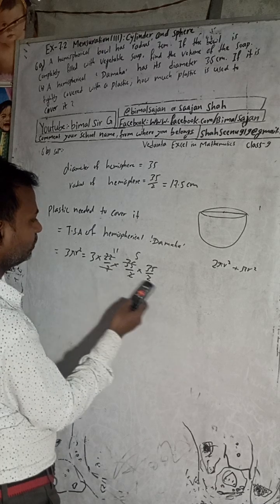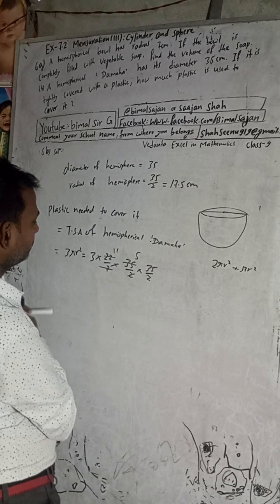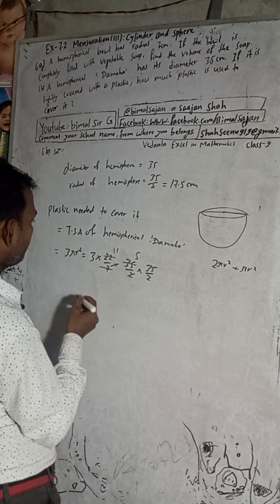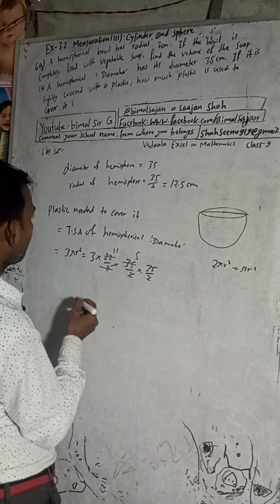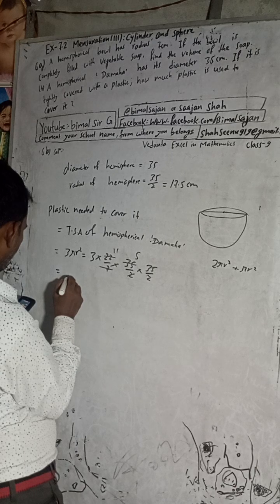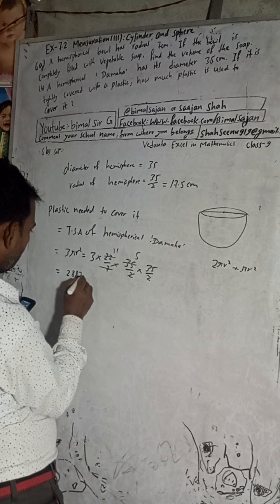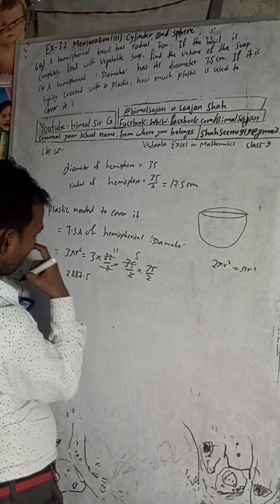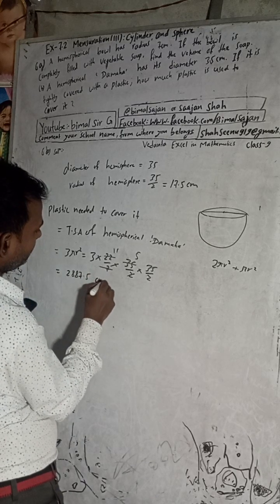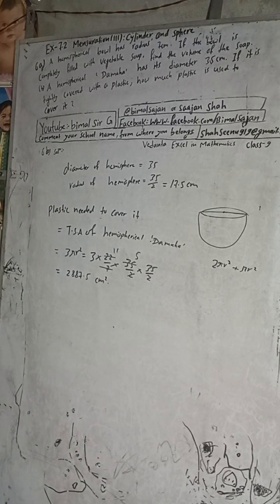Now this is divided by the two 2s in the denominator. The result is 2887.5 cm². So this is the solution of the question: 2887.5 cm².